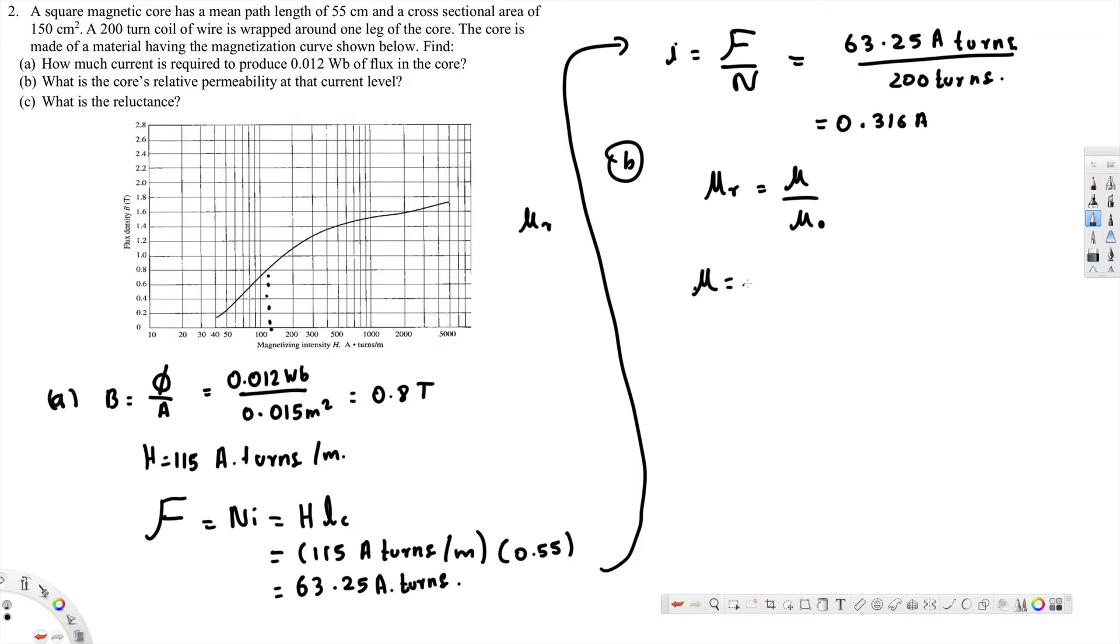To find out mu, we use this equation: mu is equal to B over H. B is the flux density, that's 0.8 tesla, divided by magnetizing intensity, that's 115 ampere turns per meter. If you calculate this you're going to get 0.00696 henrys per meter.